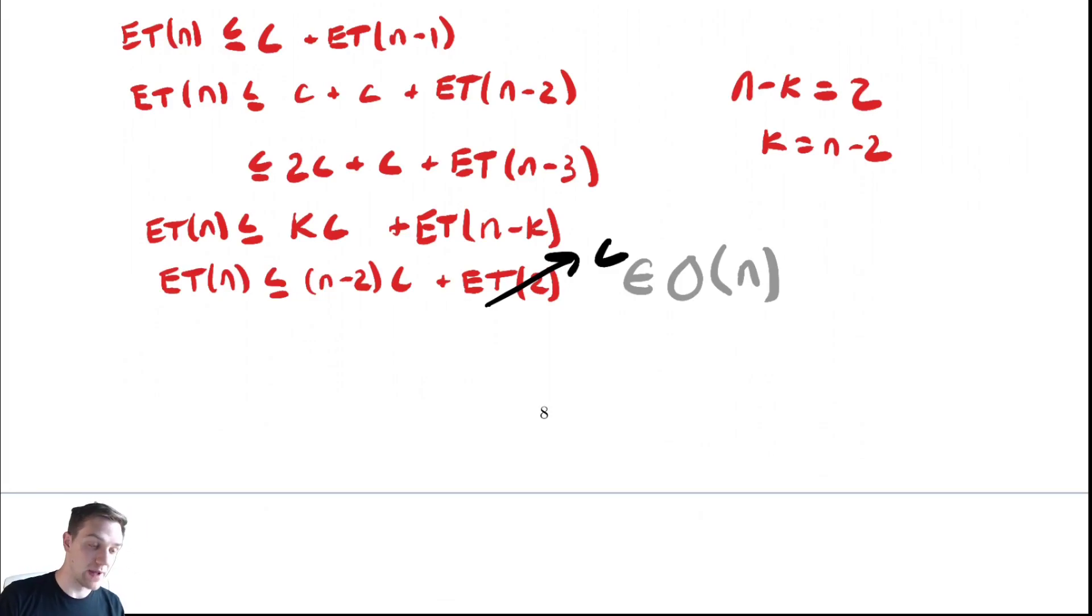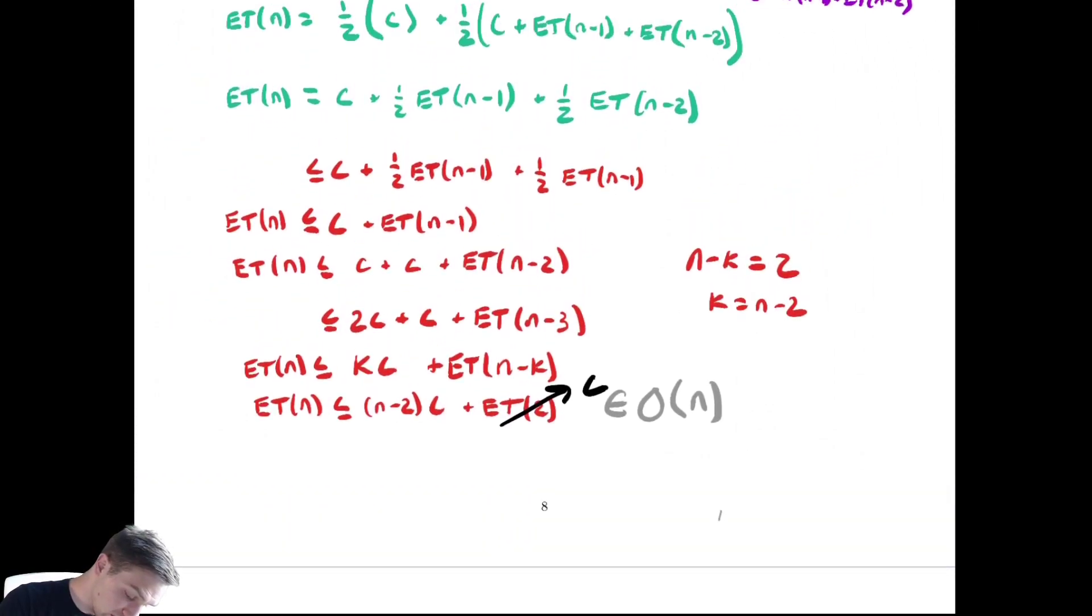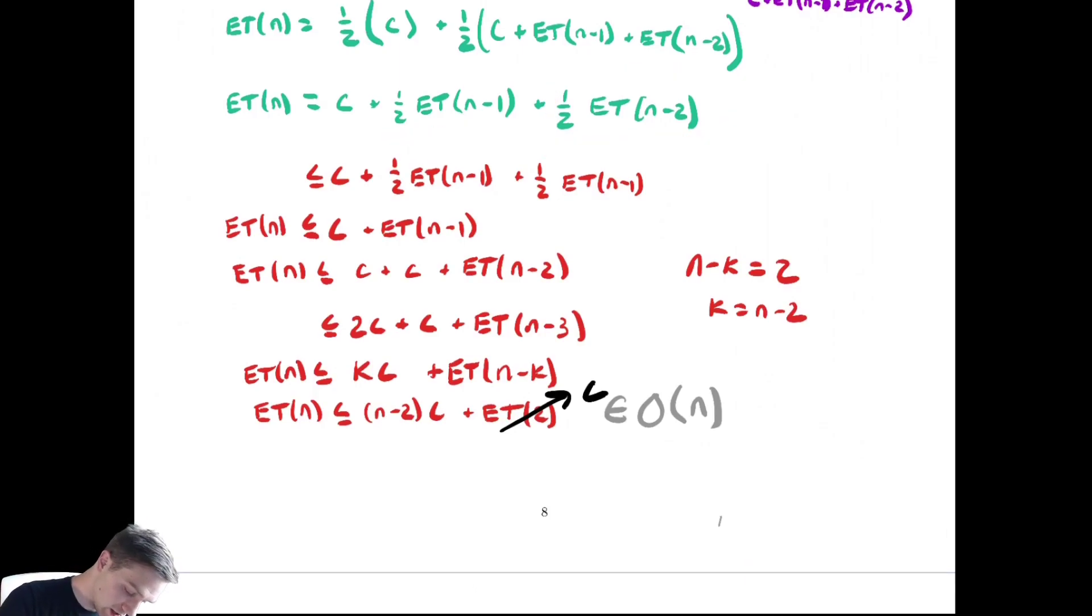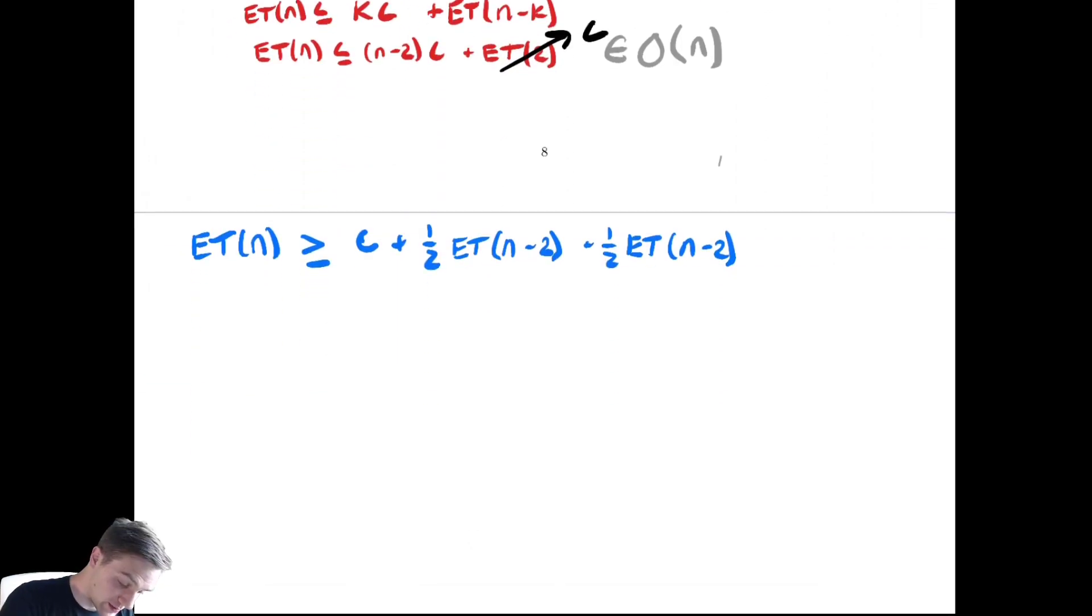Now we must show that it's in big Omega of n. I will show it's in big Omega of n in blue here. So let's go back up to the original. If I want to bound this below, I can replace the larger of the two recursive calls with the smaller. So let's do that. We have ET(n) is greater than or equal to - the c stays around. The larger of the two gets replaced by the smaller. So the ET(n-1) changes to ET(n-2). And the other ET(n-2) will hang around. Let's group together our like terms.